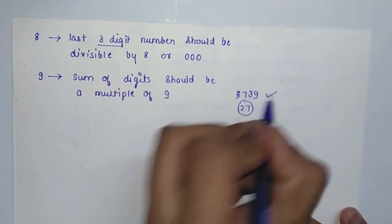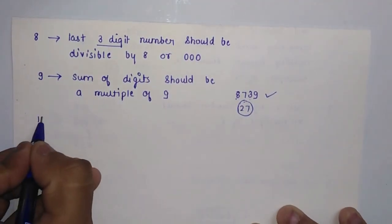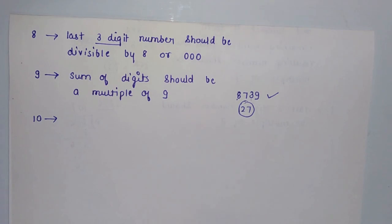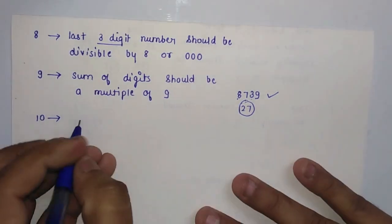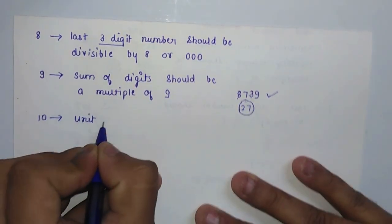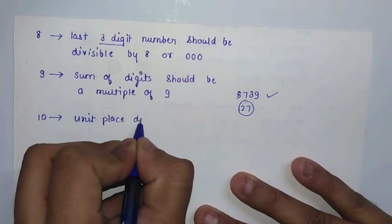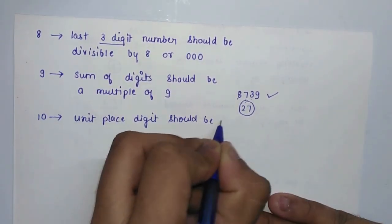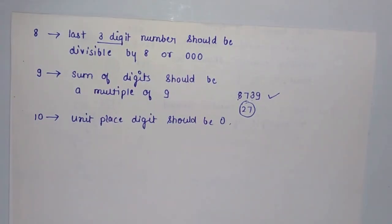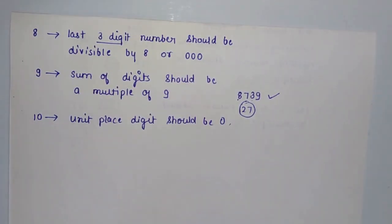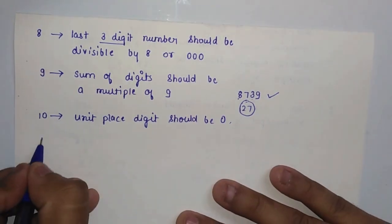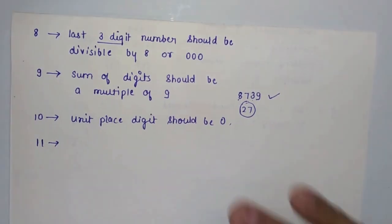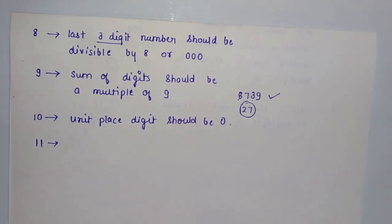The divisibility rule for 10 is very simple: the unit place digit should be 0. For example, 1000, 1100, 1200, 1210 — these are all multiples of 10. Now let's talk about the divisibility rule for 11.